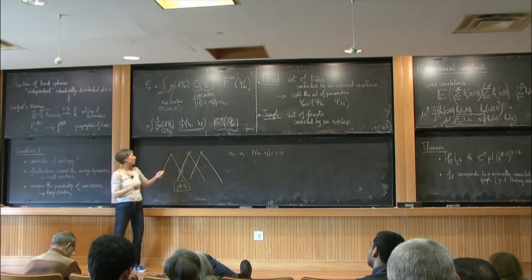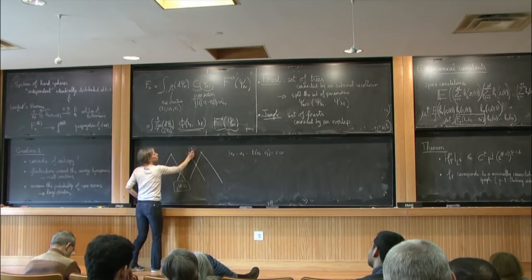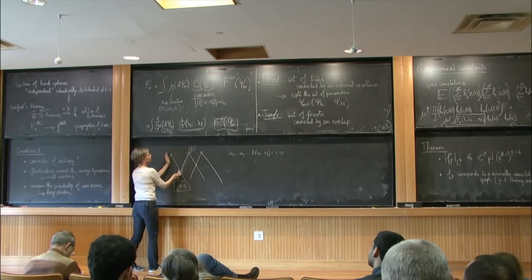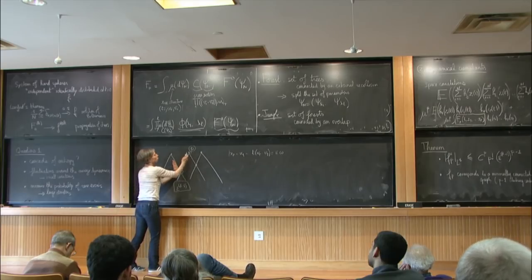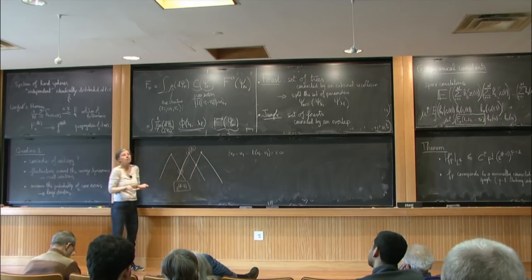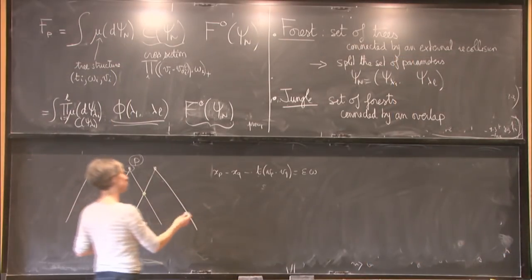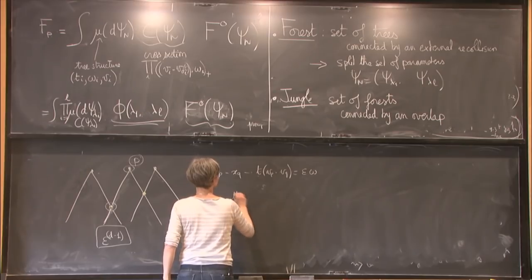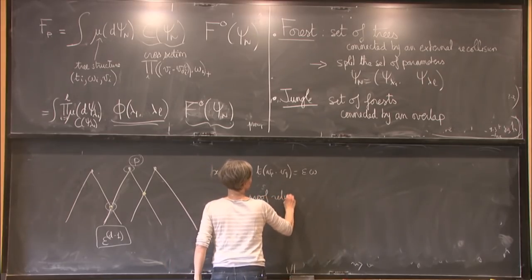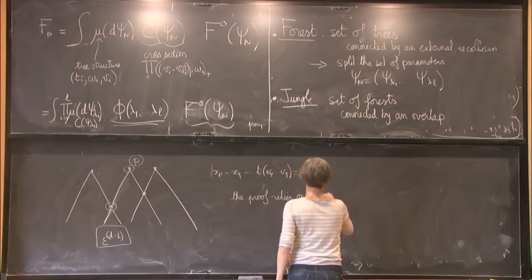The proof of the second item — that in the limit F_p corresponds to a minimally connected graph — is that once you have the connected structure, if you add any other connection (a recollision between two already-connected trees, or another overlap), meaning you don't have a minimally connected graph but just a connected graph with extra links, then this additional constraint helps you gain a little bit of smallness. Any additional constraint means the configuration is negligible.